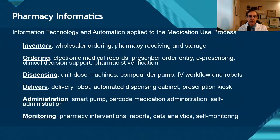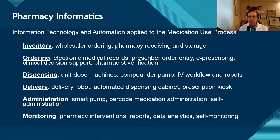If we broaden that to include inventory control, we have: inventory control, ordering, dispensing, delivery, administration, and monitoring. Within each of these categories, different technologies have been applied — such as barcode scanning for ordering, using shelf tags, receiving and storing medications in automation devices, electronic ordering in both acute care and retail settings, and clinical decision support for electronic prescribing. We also have dispensing machines and robots that can make IVs, delivery robots, smart pumps, barcode medication administration at the bedside to assure the five rights, and reports and analytics for monitoring patients.